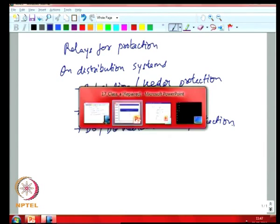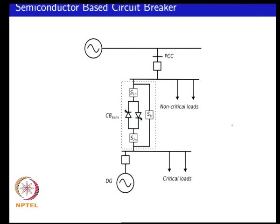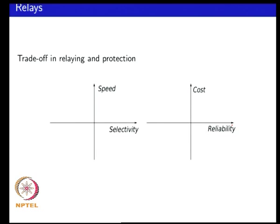If you look at the attributes of a protective device, you are looking at one that operates at high speed — it is capable of making decisions rapidly. You would also like to have selectivity, in the sense that if a relay is deciding whether to trip or not, it should trip where it is necessary. For example, if you have a fault in the zone of protection it has to trip, whereas if the fault is outside the zone it should not trip. It should be tripping for the right reason.